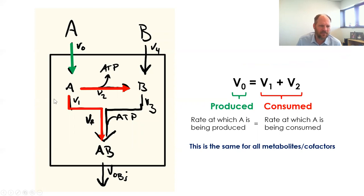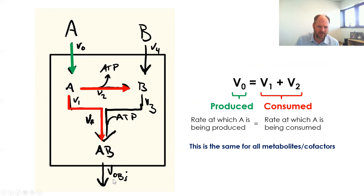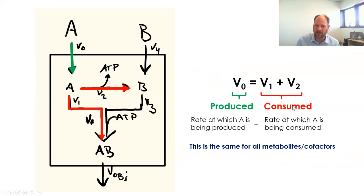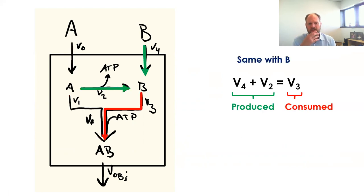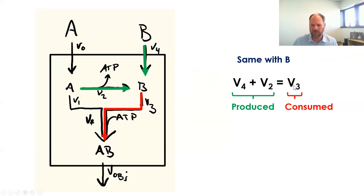The same goes for B. If dB/dt — the rate that B is changing over time — is zero, then all the production rates V2 and V4 must be equal to the consumption rate V3. We can collect those terms. The production and consumption of ATP must also be equivalent, so V2 must equal Vf. The rate that ATP is produced must equal the rate that it's being consumed.